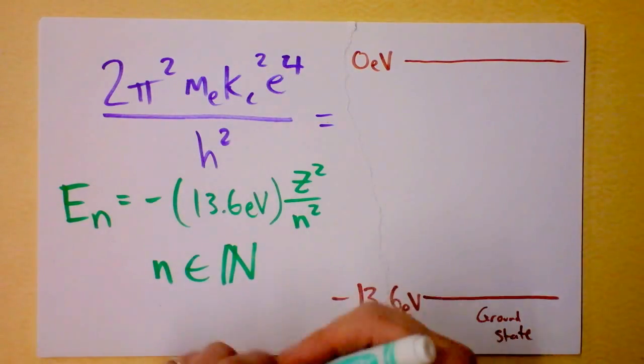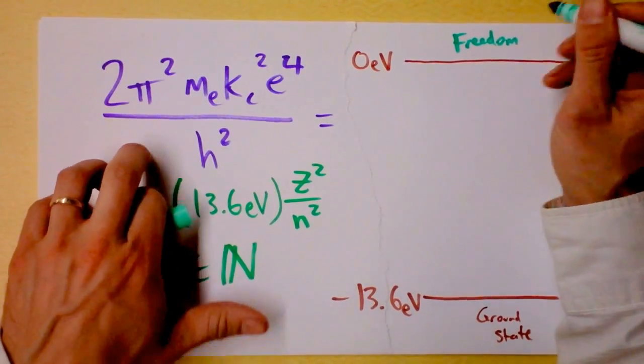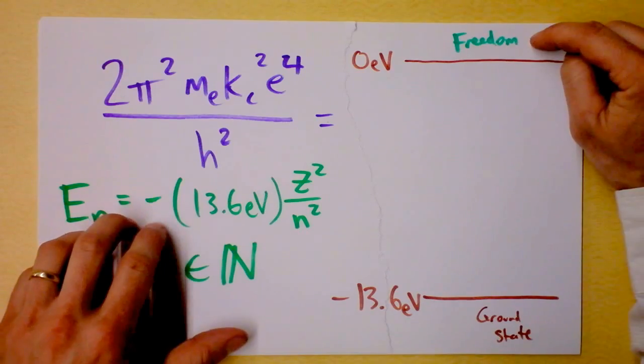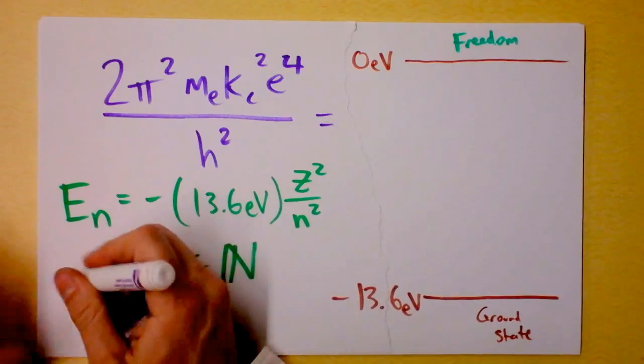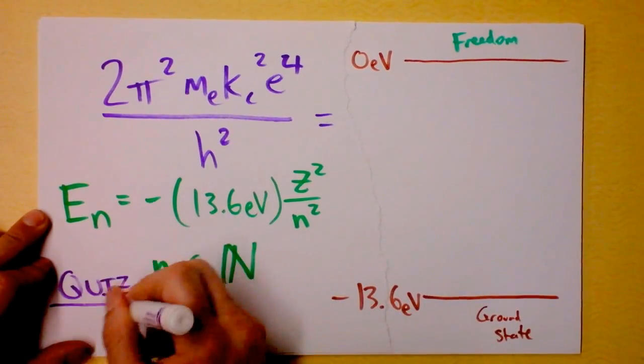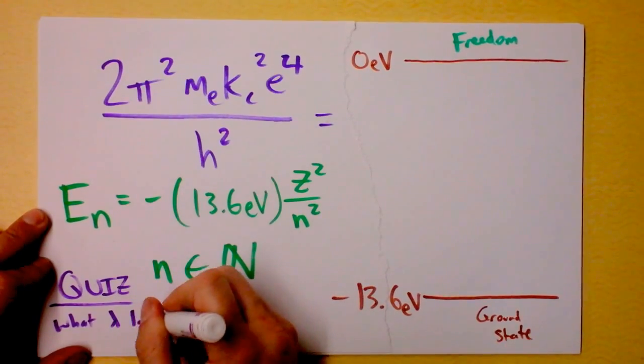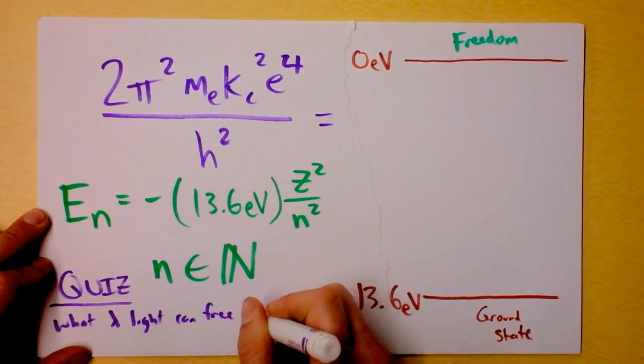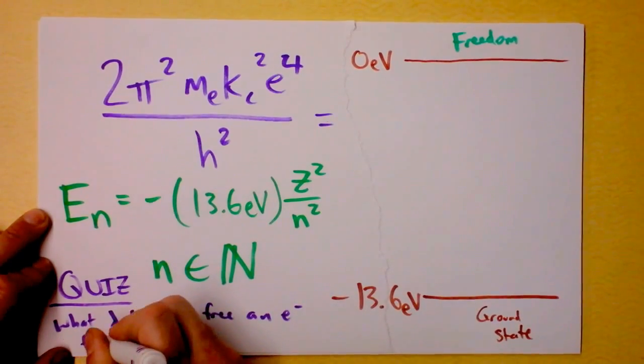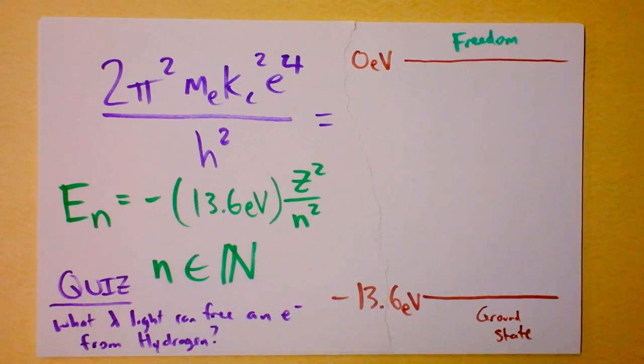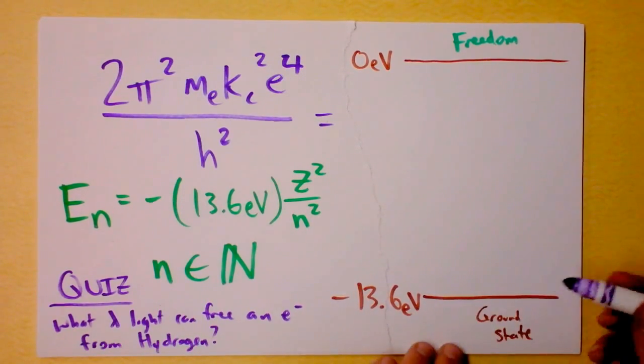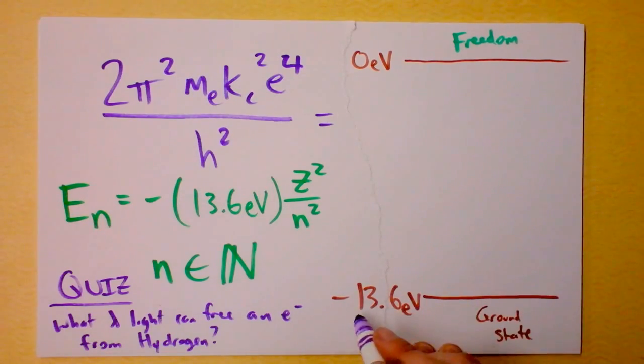Zero electron volts right here. And up here, we'll have to do this in Seafoam Green because it's so happy, up here is freedom. Remember we talked about getting your uncle out of jail? That's getting your uncle out of jail. If you can get an electron to get out, well, let's have a little quiz. What wavelength light can free an electron from hydrogen?